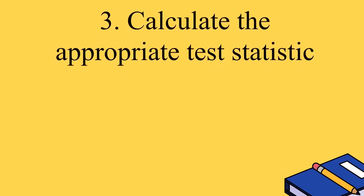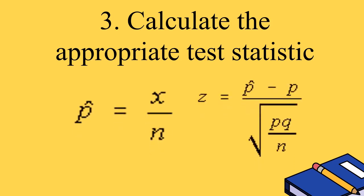The third step is to calculate the appropriate test statistic. The formula for p-hat is p-hat equals x over n. The second formula is z equals p-hat minus p, all over the square root of p times q over n. Where p is the population proportion, n is the sample size, z is the test statistic, and p-hat is the observed proportion.